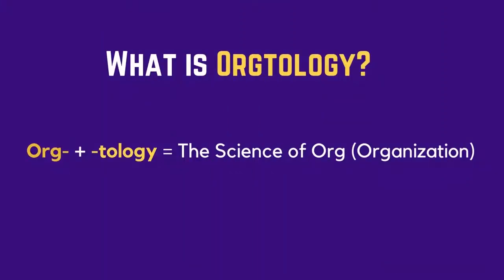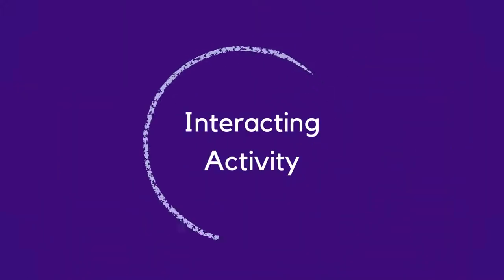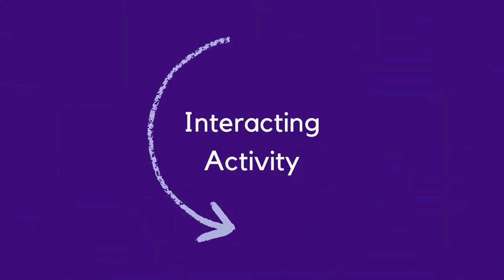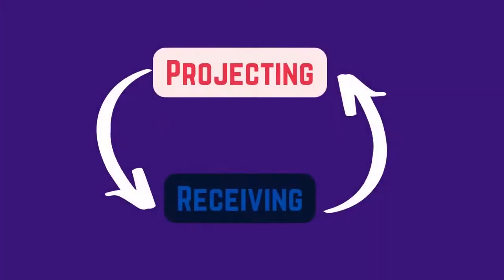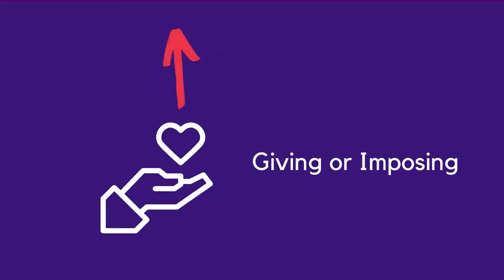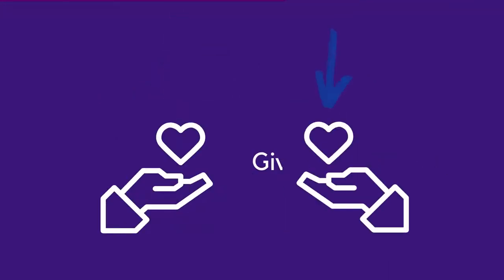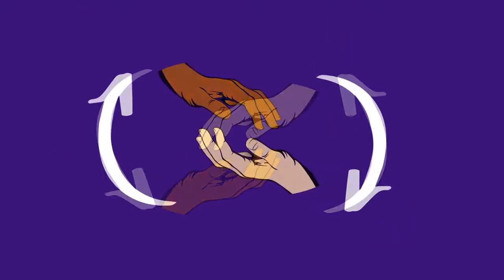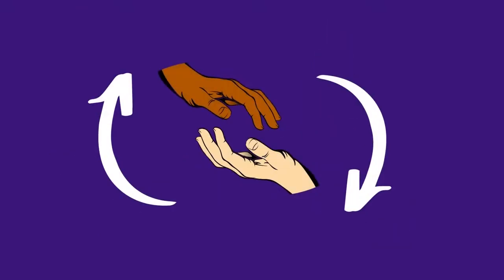Octology is the science of organization. To exist, org must have interacting activity within it. This interaction is a cycle of projecting and receiving. To be projective is about giving or imposing. To be receptive is about taking or submitting. Literally a give and take.